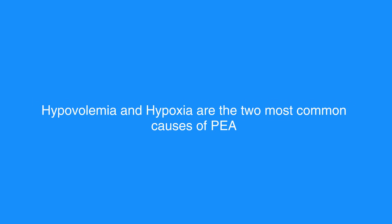Hypovolemia and hypoxia are the two most common causes of PEA. They are also the most easily reversible and should be at the top of any differential diagnosis. If the individual has return of spontaneous circulation, or ROSC, proceed to cardiac arrest care.